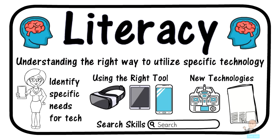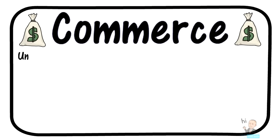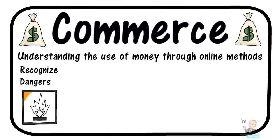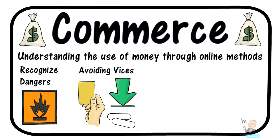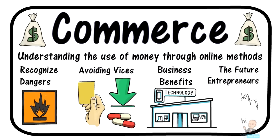Subscribe to newsletters, read articles, and keep up to date with everything that's going on. The second of the nine essential elements of digital citizenship is commerce. Digital commerce is about understanding the use of money through online methods. You must recognize all the dangers that come with using your money in the digital world — commerce is even more dangerous online than in face-to-face interactions. There are online credit gambling sites, illegal downloads, and even ways to get drugs online. Nevertheless, business will benefit because of the ease of transaction with online payment methods. Many young adults have become full-time entrepreneurs due to the wealth of information and people available on the internet.